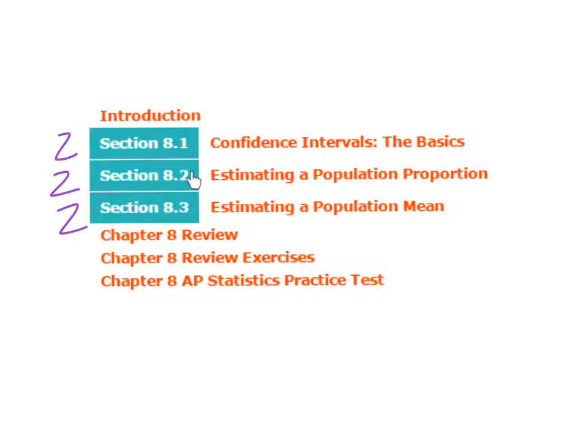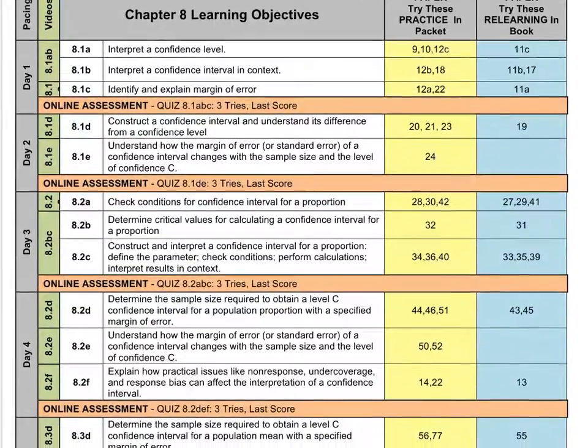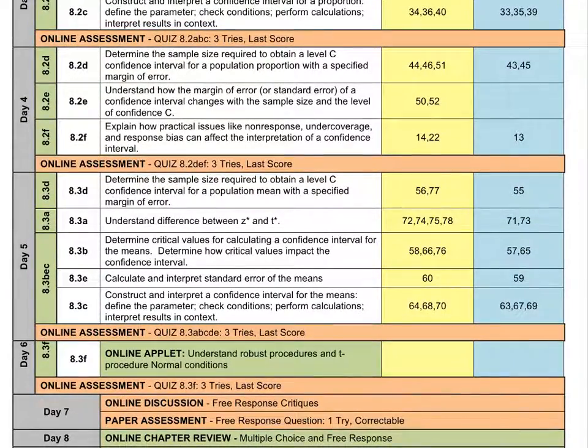The second one is going to focus on population proportions, and then we're going to wrap up with the population mean. You'll be encountering this standard format for our learning for all 6 days. We will wrap up the chapter on our 6th day with an applet to help you better understand robust procedures.